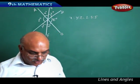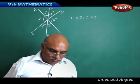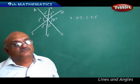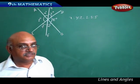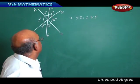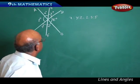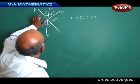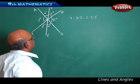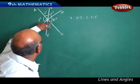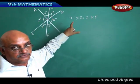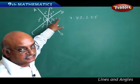We want to find out what X, Y, and Z are going to be. Since O is the center, the sum of all these angles should be equal to 360 degrees.